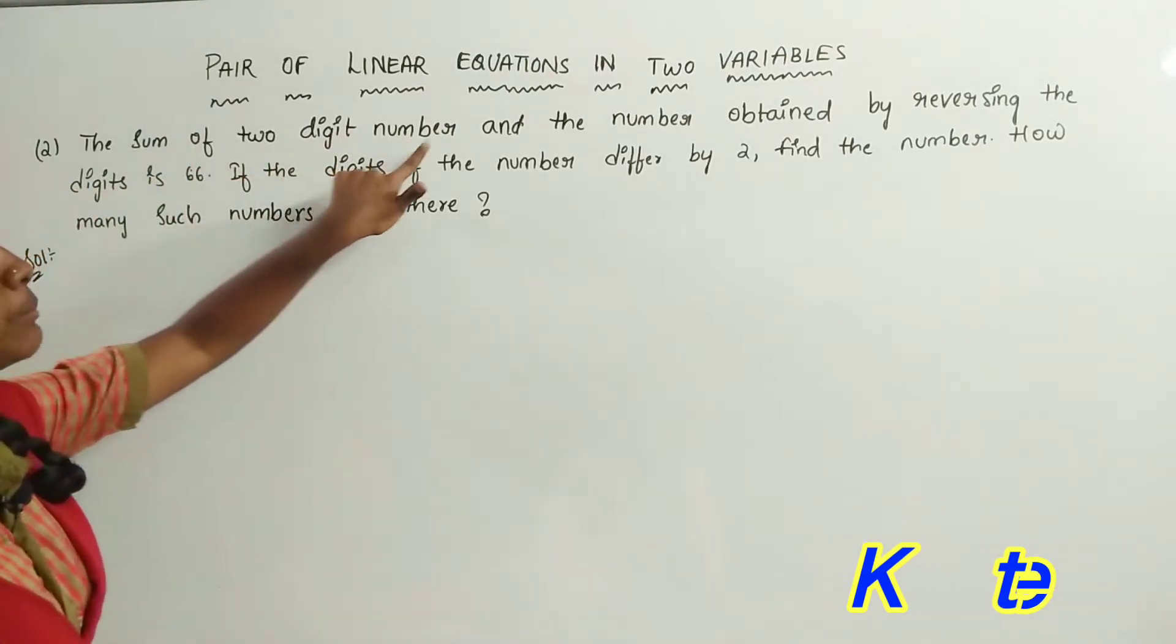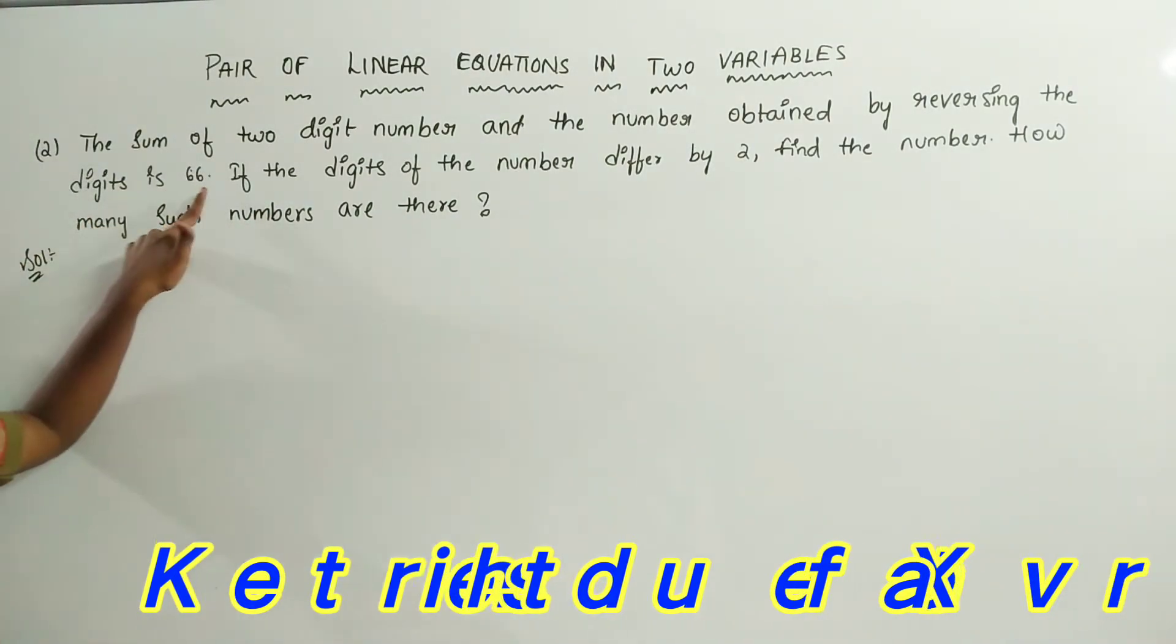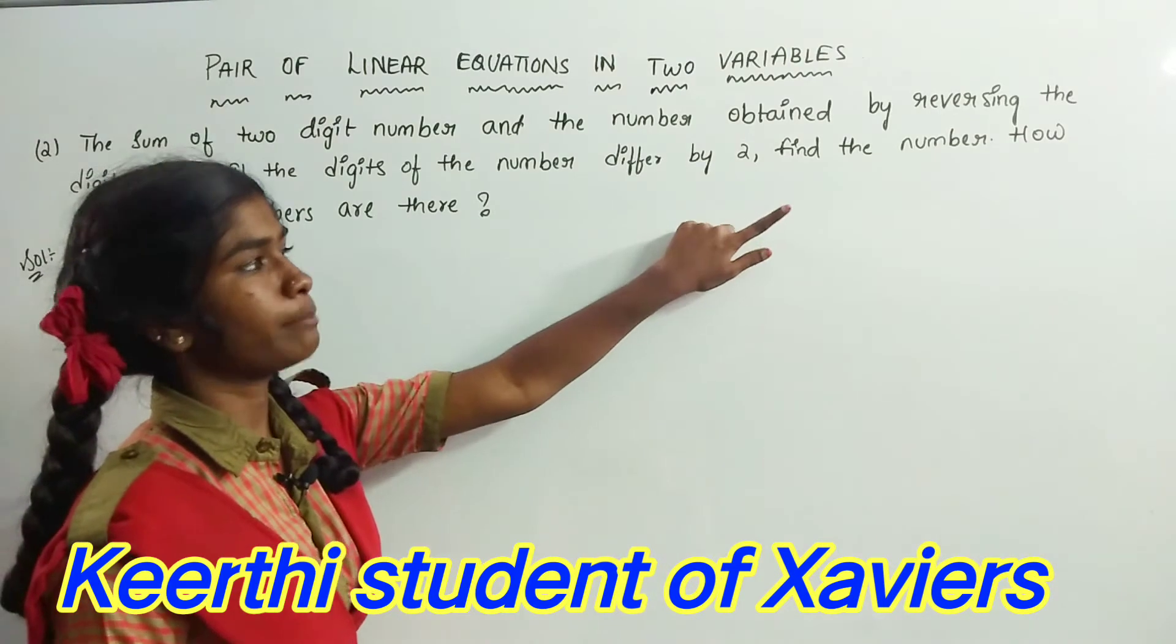The sum of a two-digit number and the number obtained by reversing the digits is 66. If the digits of the number differ by 2, find the number. How many such numbers are there?